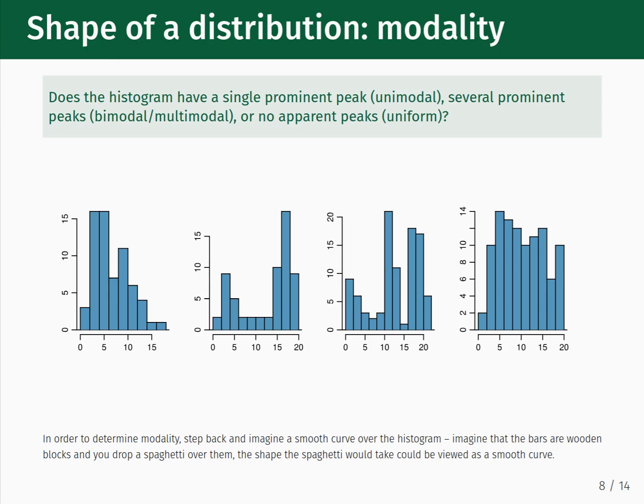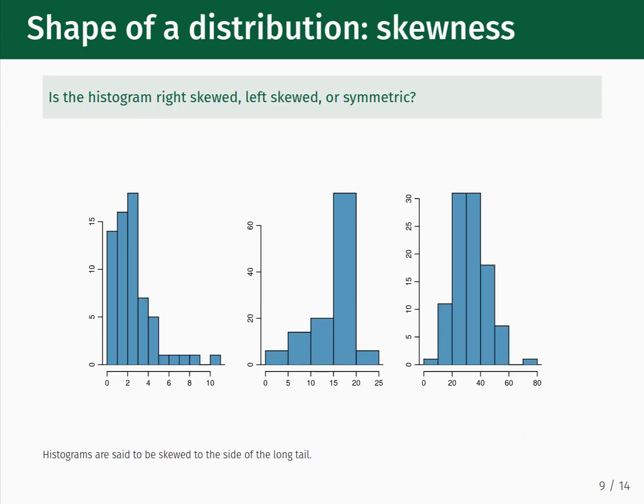Starting from the left, you see an example of a unimodal distribution with a single prominent peak, a bimodal distribution with two peaks, a multimodal distribution with several peaks, and a uniform distribution with no apparent peaks.